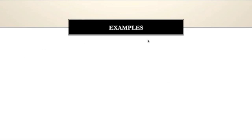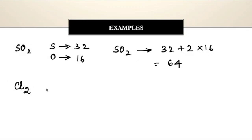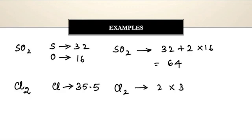We can take other examples too. For SO2: sulfur has atomic mass 32 and oxygen has atomic mass 16, so the molecular mass of SO2 is 32 plus 2 × 16, which equals 64. For chlorine (Cl2): the atomic mass of chlorine is 35.5, so the molecular mass of Cl2 is 2 × 35.5 = 71, because two atoms of chlorine combine to give one molecule of chlorine.